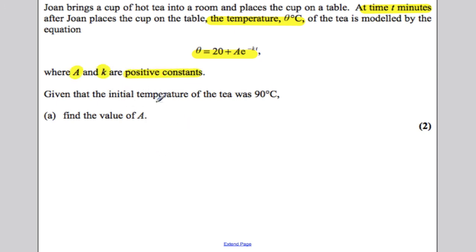A and K are positive constants. Given the initial temperature of the tea was 90 degrees, find the value of A. So by this, we're supposed to extrapolate the initial temperature we're supposed to take from that that t is zero.